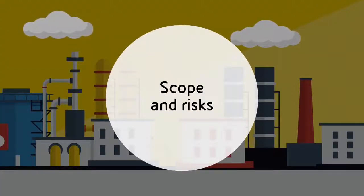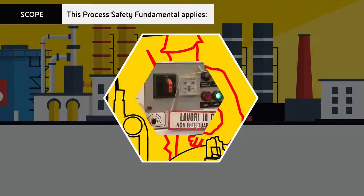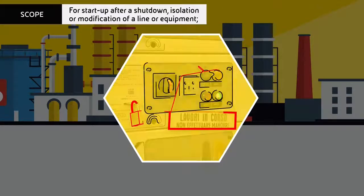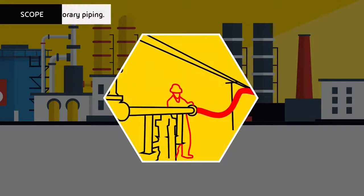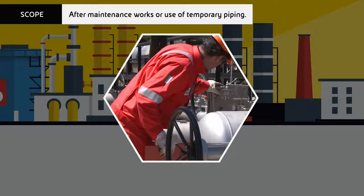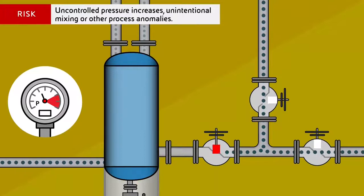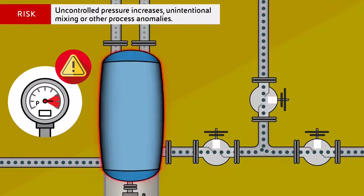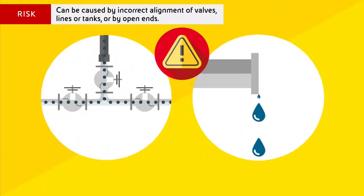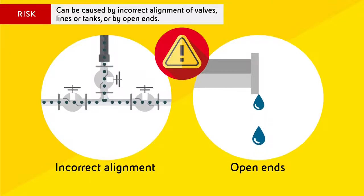Scope and risks. This process safety fundamental applies for start-up after a shutdown, isolation or modification of a line or equipment, after maintenance works or use of temporary piping. The risk is related to uncontrolled pressure increases, unintentional mixing or other process anomalies. These events can be caused by incorrect alignment of valves, lines or tanks, or by open ends.